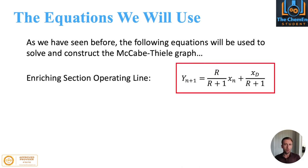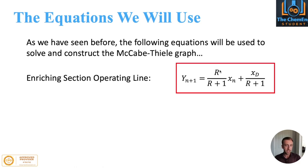A couple of the key points: for the enriching section operating line, we use this relationship whereby we have y in terms of x. We also have this parameter r, which is our reflux ratio — essentially the ratio of material that leaves the distillation column to that which is re-entered into the column. This is a very critical and key variable within distillation column design.